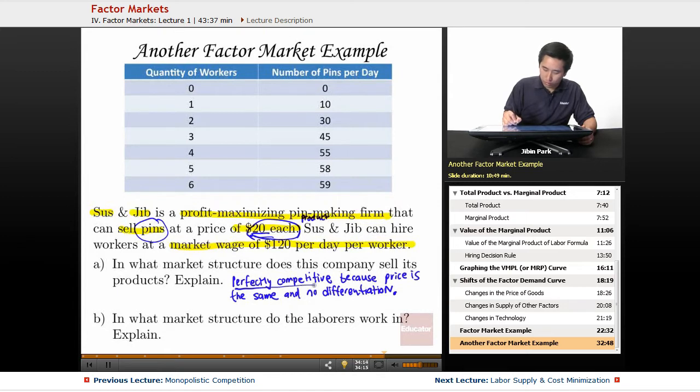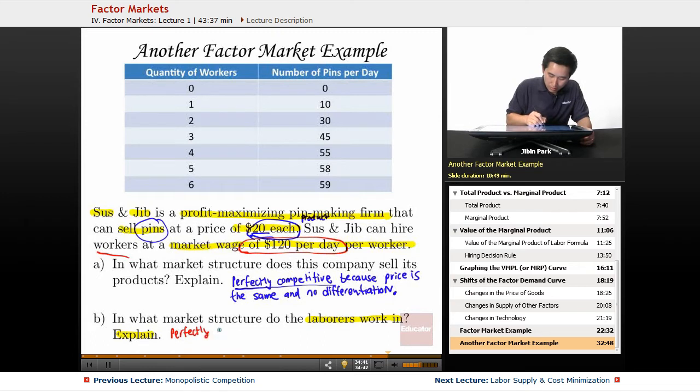You have no control over the price, so you know it's a perfectly competitive market structure. Part B is asking not for the pins but in what market structure do laborers work. Go back to the prompt—it says Susan Jib can hire workers at the market wage rate of $120 per worker. All workers are paid $120, so once again this is perfectly competitive because wage rate is constant.